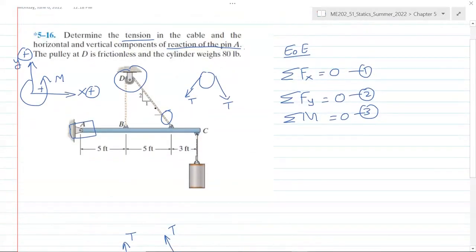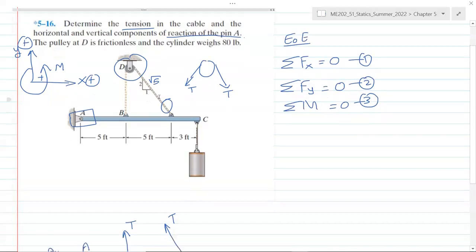For this angle we have been given the angle using this triangle method. So this is 1, this is 2, then using Pythagorean theorem this side is square root 5, which is square root of 2 squared plus 1. So 4 plus 1, square root of that is 5.